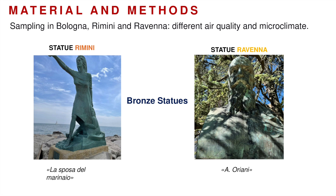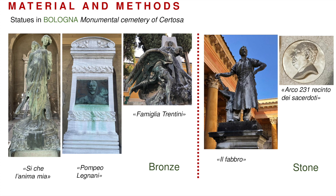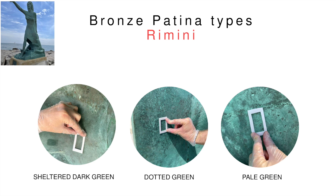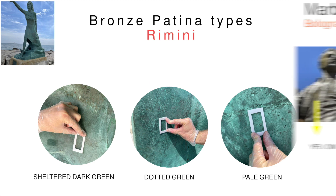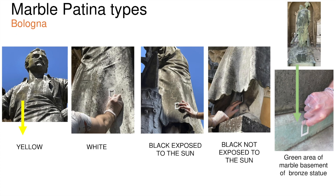A sampling campaign was performed in three different cities, since they show different air quality and microclimate. Here we show the statues from Ravenna and Rimini, and here from the monumental cemetery of Certosa in Bologna. We selected the following types of patina: from Rimini these three types; from the marble statues in Bologna we chose the yellow, white, black exposed and not exposed to the sun, and also the green area of the marble basement of bronze statues.